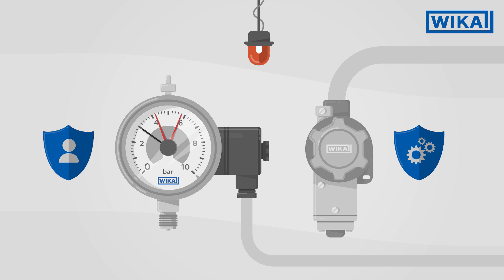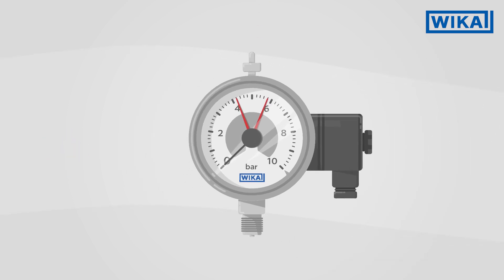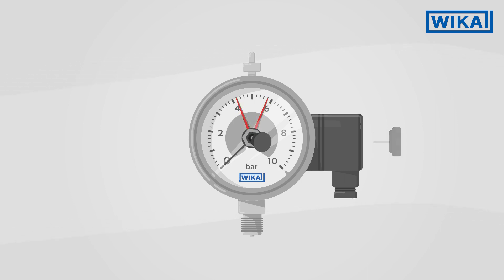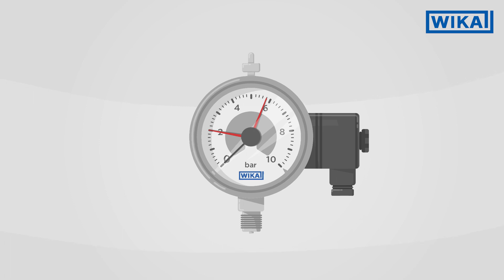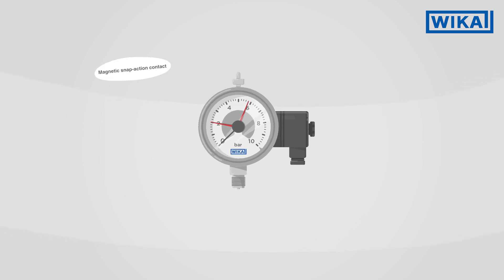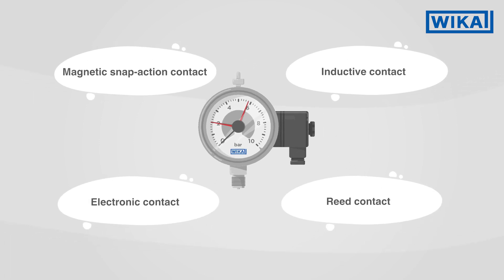The advantage of contact pressure gauges is that they can be read on site. The switch point or switch points can easily be set using the adjustment key located at the cable socket. Depending on the application, contact pressure gauges can be provided with different types of contacts.